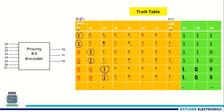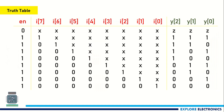Looking at the complete truth table, there is an enable control signal. If enable is equal to 0, irrespective of the inputs, the output will be set to high impedance. When enable is equal to 1, the encoder works. In the first case, i7 is equal to 1 — the encoder does not consider i6 to i0 — and it will encode this to 111. Even if in place of 'x' we have all 1s, the output will still be encoded to 111.